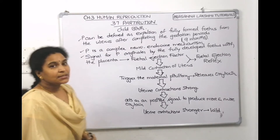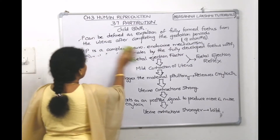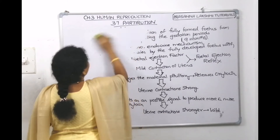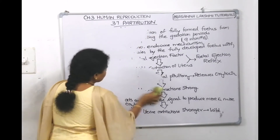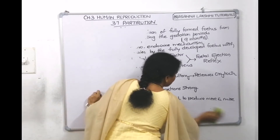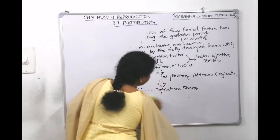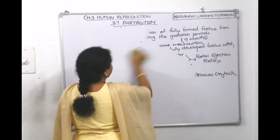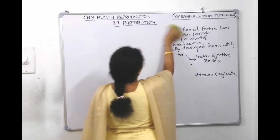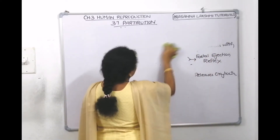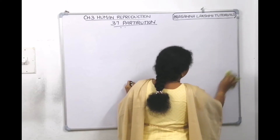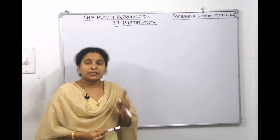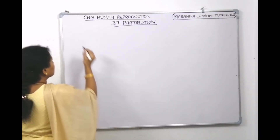Childbirth can be discussed under three phases: first, the dilation phase; second, the expulsion phase; and third, the after-birth phase. The wild uterine contractions dilate the cervix, head position is established, the amniotic fluid ruptures, and the baby is pushed out. The first phase is called the dilation phase.